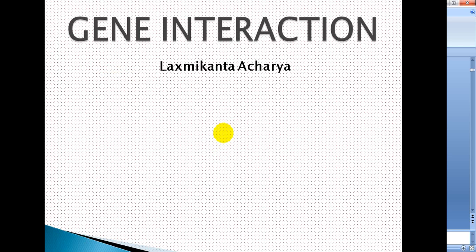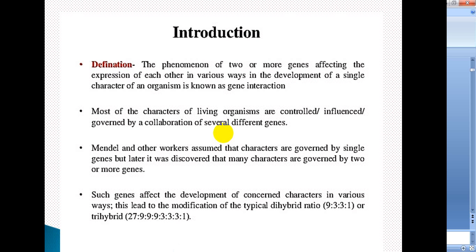Hello, welcome to the class on Legend Interaction. We have seen that for the development of a single character, there may be one gene responsible or there may be many more genes responsible. When there are more than one gene responsible for the development of a single character, each gene interferes or interacts with each other, and this phenomenon is called gene interaction. In most characters of living organisms, we see that characters are controlled by or governed by several different genes.